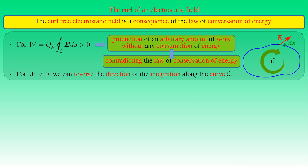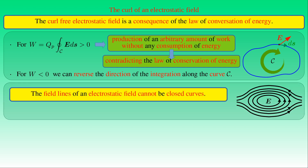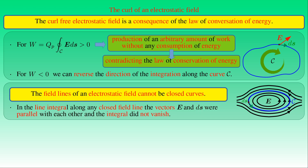A consequence of the vanishing line integral is that field lines of an electrostatic field cannot be closed curves. If field lines formed closed curves, we could compute the line integral of E along a closed field line C, where E and dS would be parallel throughout the curve. As a result, the integral would not vanish, contradicting the initial statement. This precludes the existence of closed field lines in an electrostatic field.